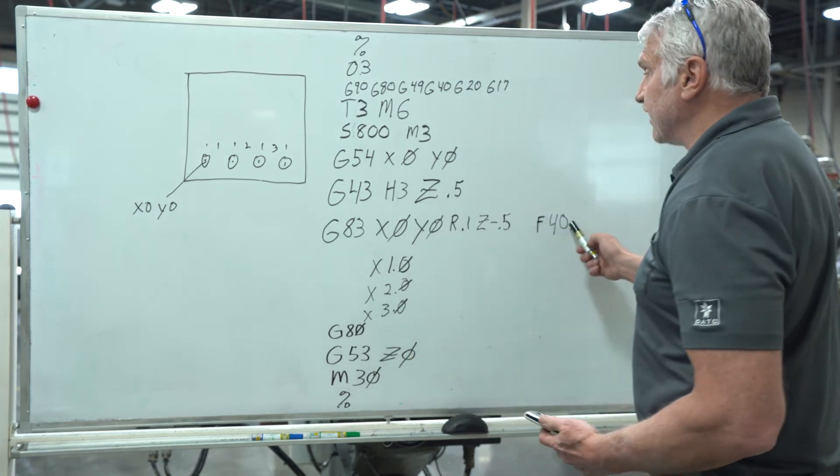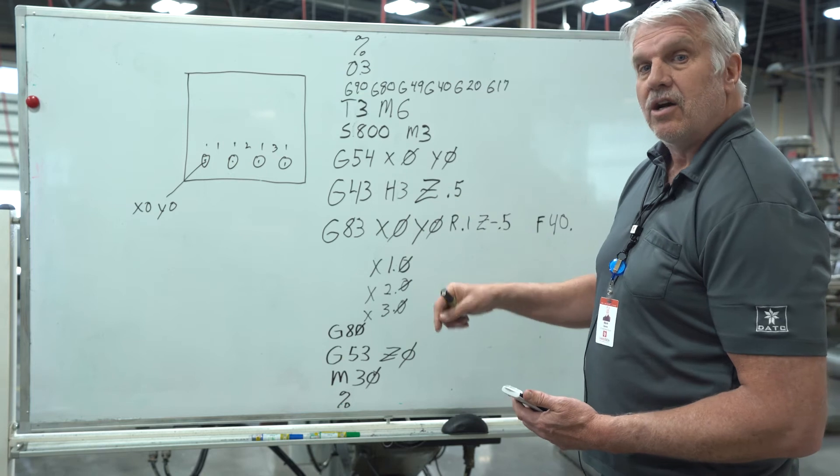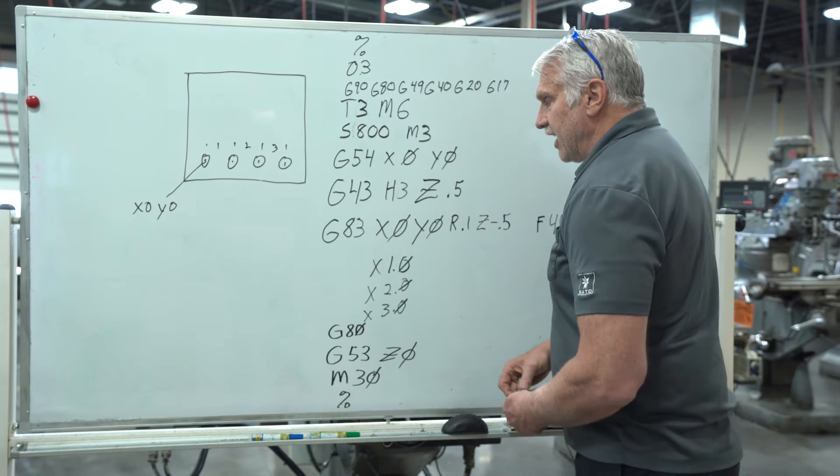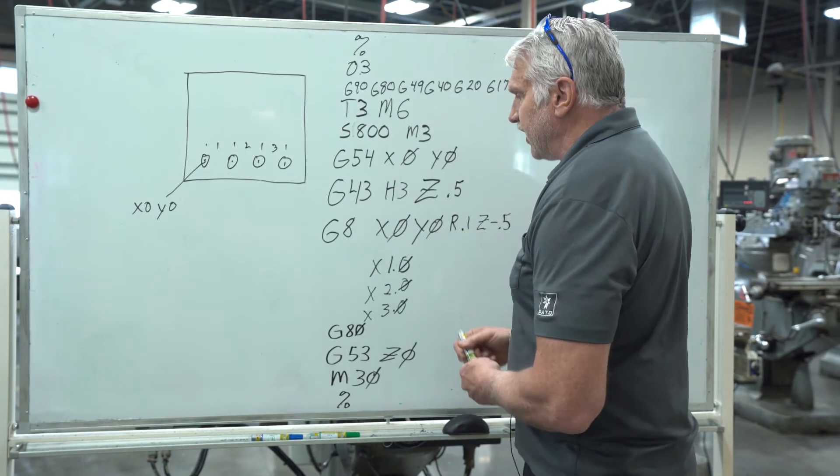That's where 40 inches a minute at 800 RPM it will synchronize, go down into the part, reverse and come back out. The next thing we need to change here, instead of a G83 we change it to a G84.